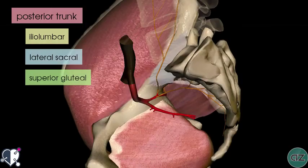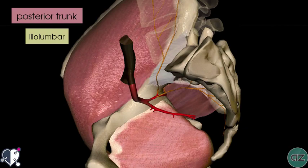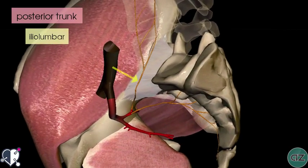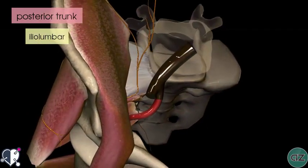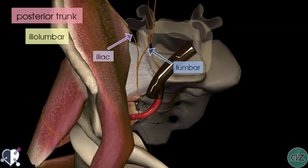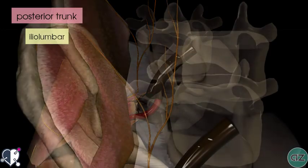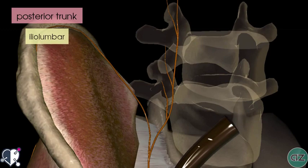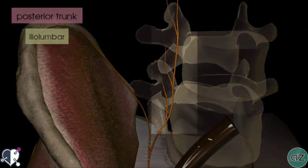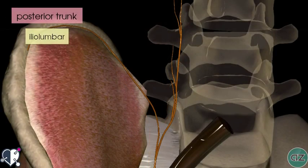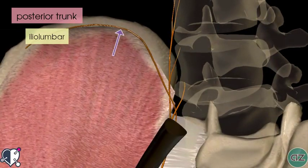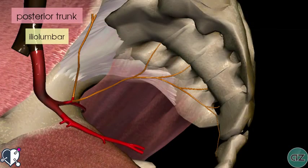Zooming out to take a look at the iliolumbar artery — rotating the model, you can see its two branches: the iliac branch and the lumbar branch. The lumbar branch extends superiorly, adjacent to the lumbar vertebrae. The iliac branch runs around the iliac crest and supplies the iliacus muscle.